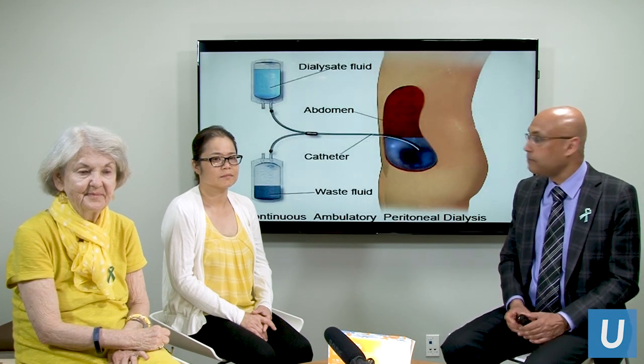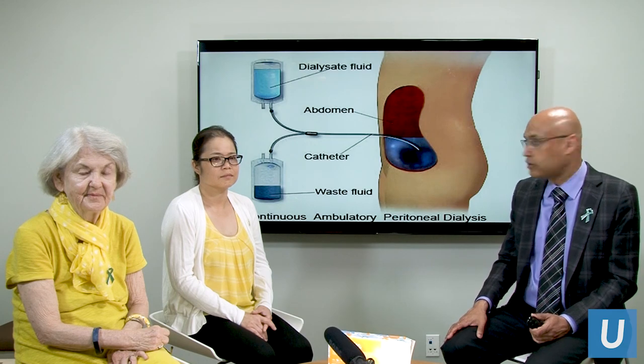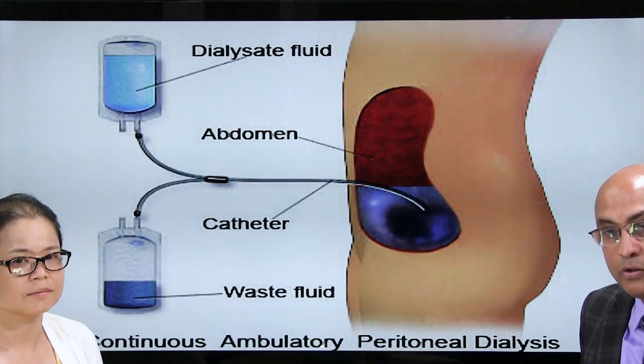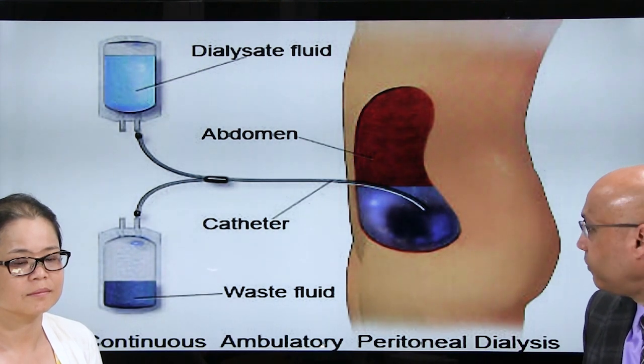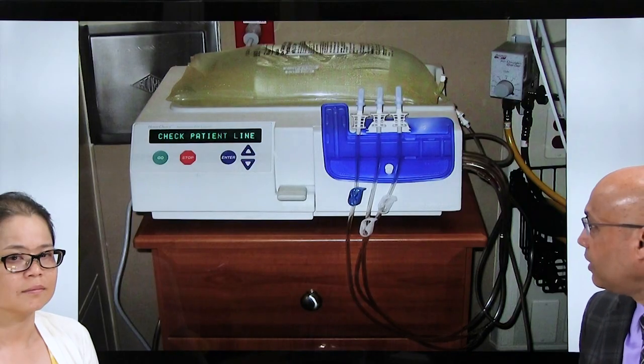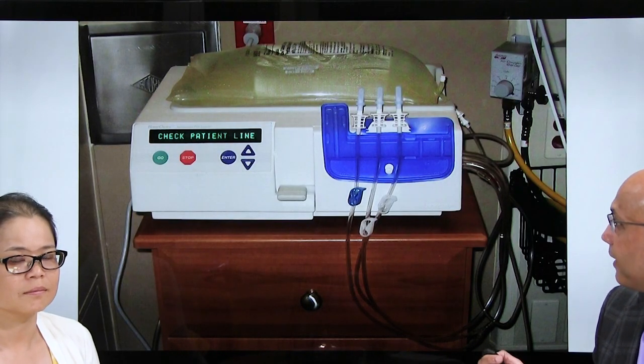This is what peritoneal dialysis looks like. You reuse your own body cavity — the peritoneal cavity — to clear waste and toxic products from your body. Instead of going into your blood, a catheter goes into the peritoneal cavity and can be relatively easily placed and removed if needed. The dialysis machine, called the cycler, is fairly small, and people can travel with it — we'll be discussing travel on dialysis later.